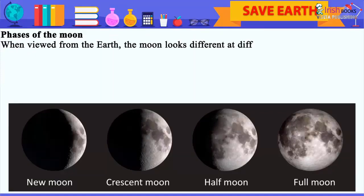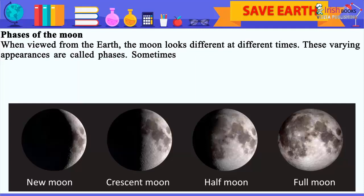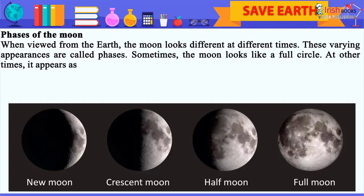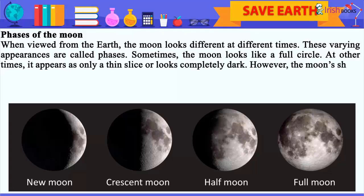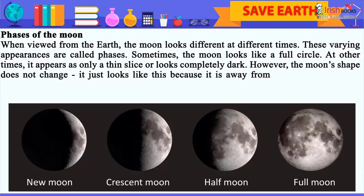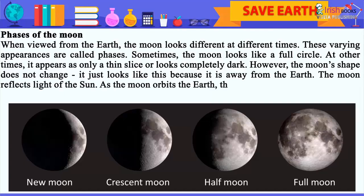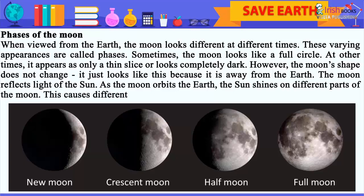Phases of the moon: When viewed from the earth, the moon looks different at different times. These varying appearances are called phases. Sometimes the moon looks like a full circle; at other times it appears as only a thin slice or looks completely dark. However, the moon's shape does not change. As the moon orbits the earth, the sun shines on different parts of the moon, causing different parts to be visible from the earth.